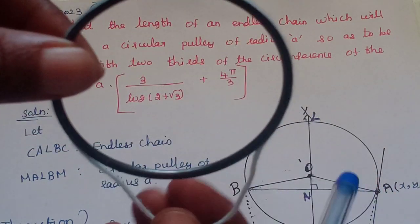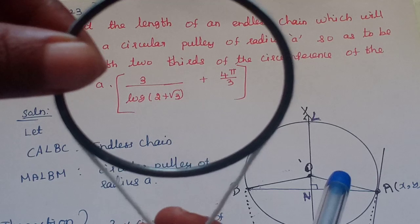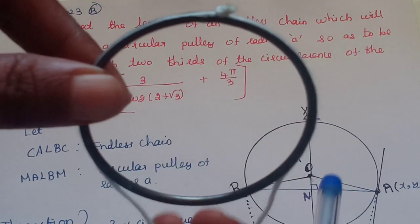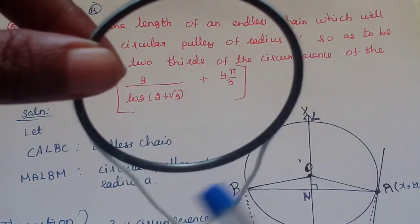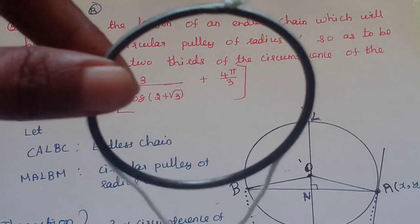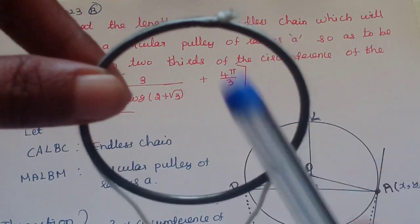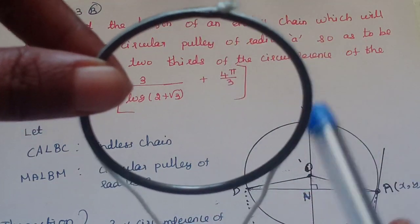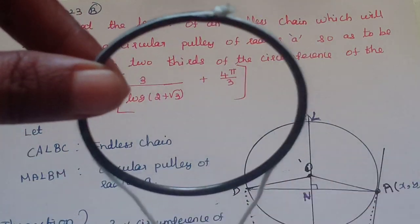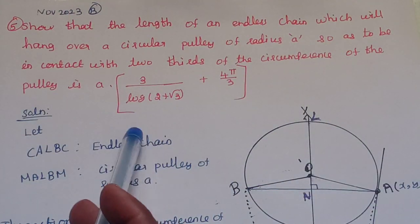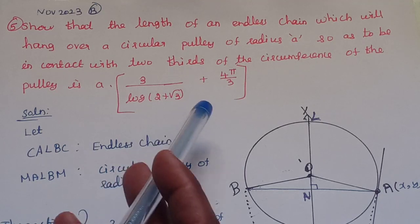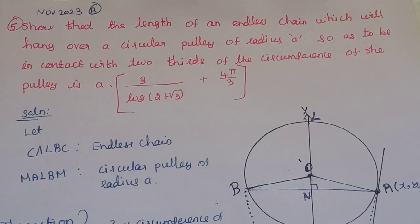The remaining portion is one-third, and the contact portion is two-thirds. The length of the chain is A times 3 divided by log(2 + √3), plus 4π/3.